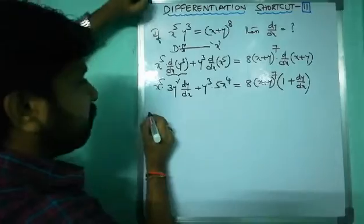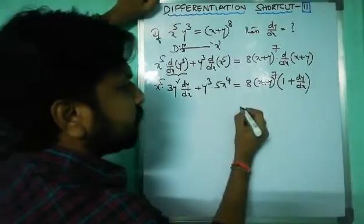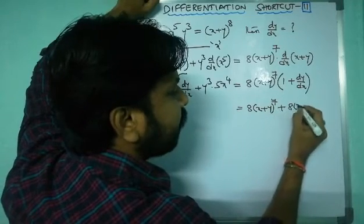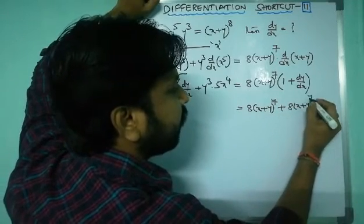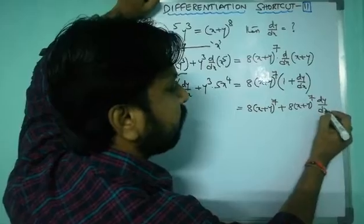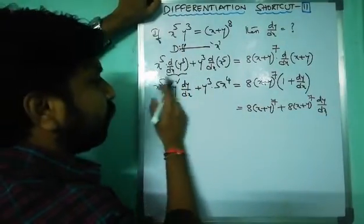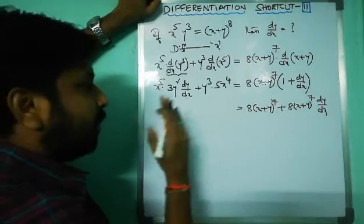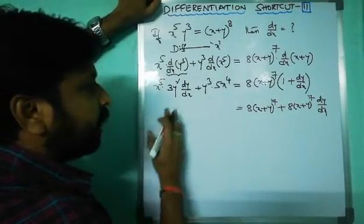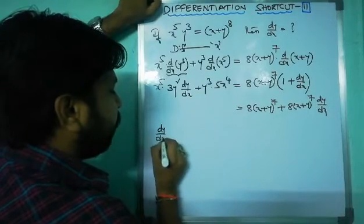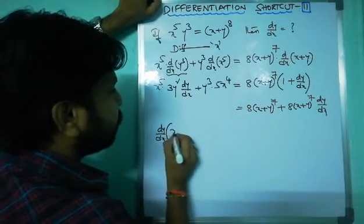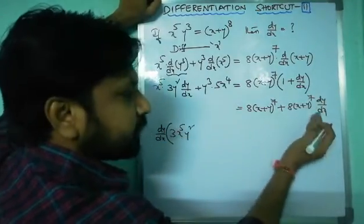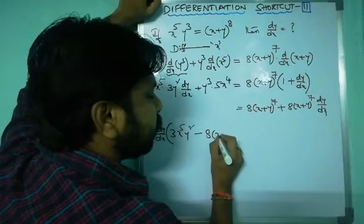Expanding the right side: 8(x+y)^7 plus 8(x+y)^7 times dy/dx. Now collect all dy/dx terms on one side and the remaining terms on the other side. Taking dy/dx as common on the left side gives: dy/dx times 3x^5 y^2.